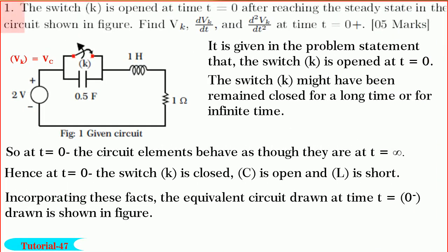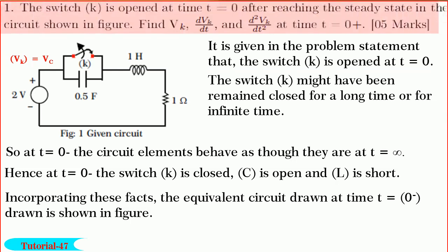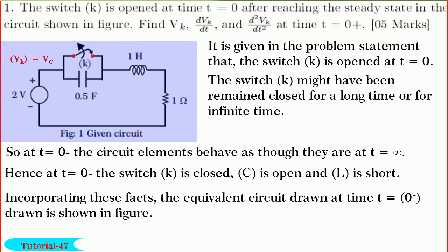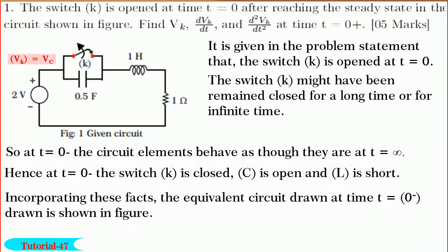Friends, first let us solve the question on Transient Analysis. In this question, we are required to find φk of 0+, dvk/dt of 0+, and d²vk/dt² of 0+ in the circuit shown in figure. Observe the network. The switch k is connected across a capacitor of 0.5 farads. So φk is the voltage across the capacitor. Let φc be the voltage across it. Hence φk is equal to φc.